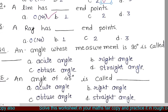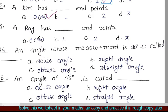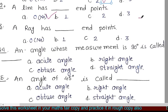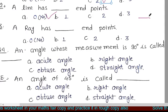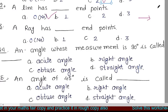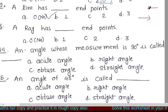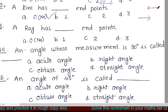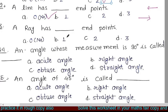The next question is: a ray has dash endpoints. Ray का one endpoint होता है और ये एक direction में extend होती है — चाहे right side में हो, चाहे left side में हो. So a ray has one endpoint. So 'b' is the correct answer.